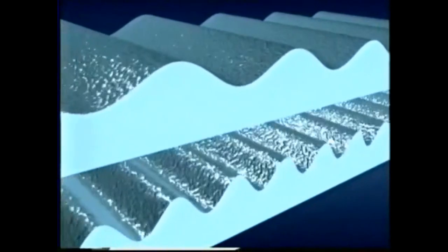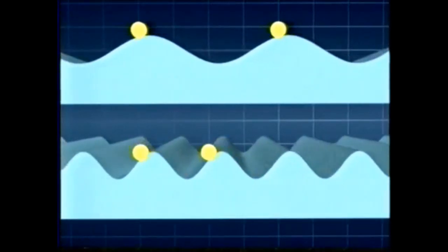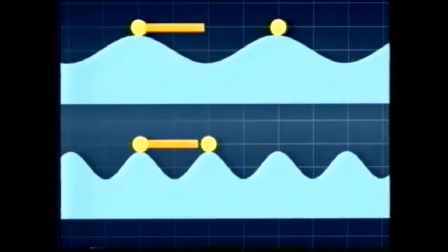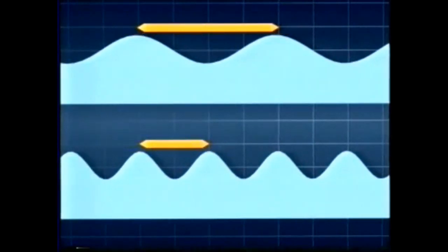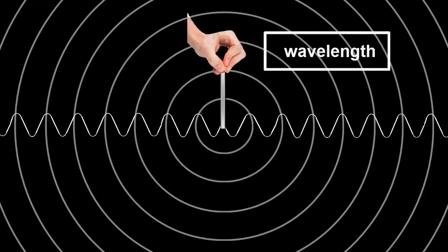Here are two waves — there are clearly some differences between them. That difference is the distance from one peak to the next. This distance is called the wavelength, and the wavelength for the top wave is twice that of the bottom wave. This can also be shown as the distance between two peaks on ripples in a pond, or even between two troughs. The symbol we use for wavelength is the Greek letter lambda, like an upside-down y.